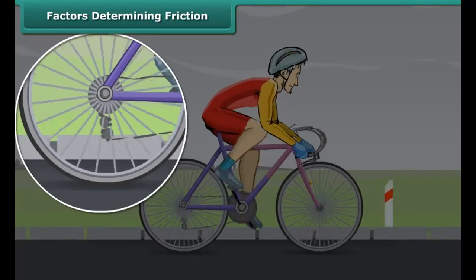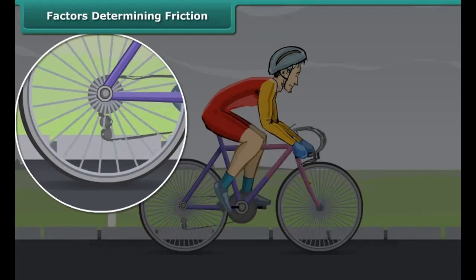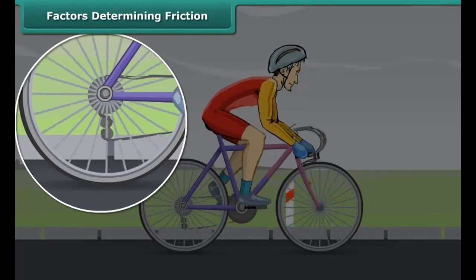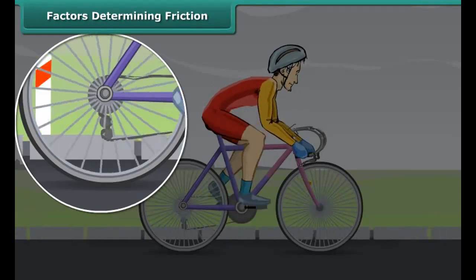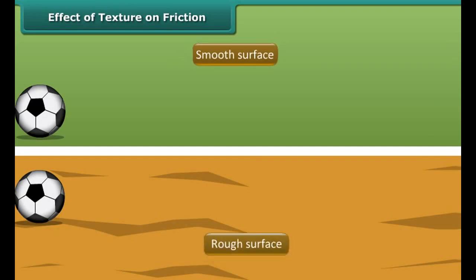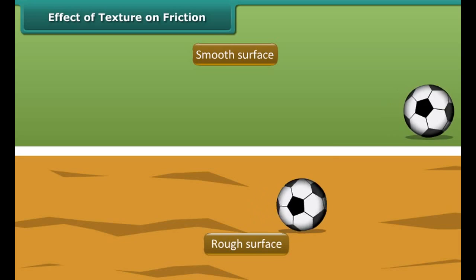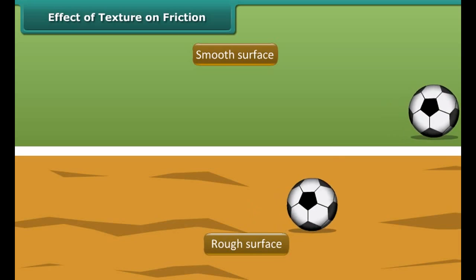While in motion, the tires of the bicycle are rubbing against the surface of the road. When two surfaces rub on one another, a force comes into play. This force acts in the direction opposite to the direction of motion, thus slowing down the motion and finally bringing the moving object to a stop.